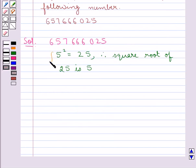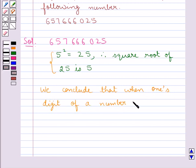So from this, we conclude that when one's digit of a number is 5, then its square root will have 5.